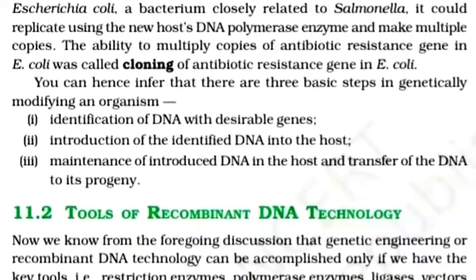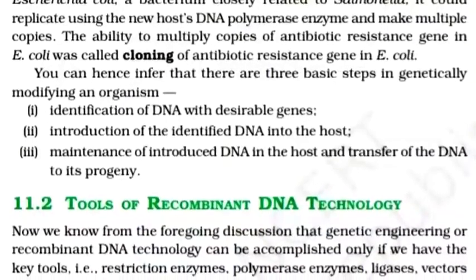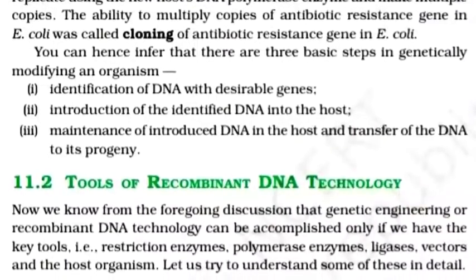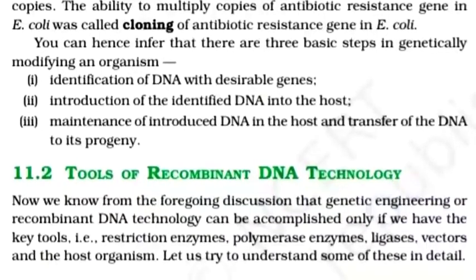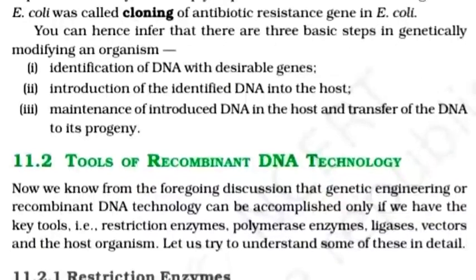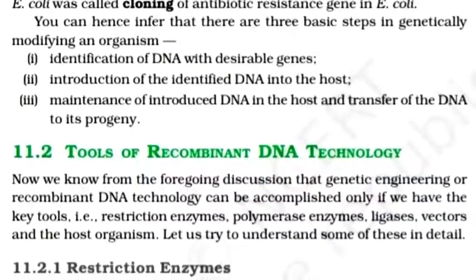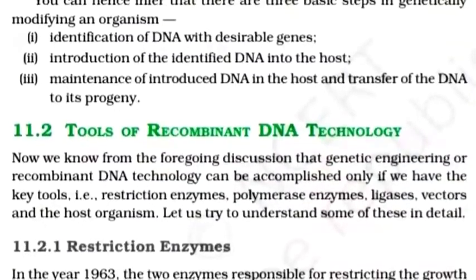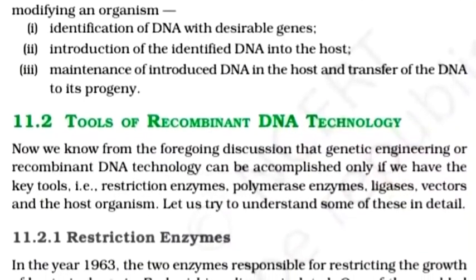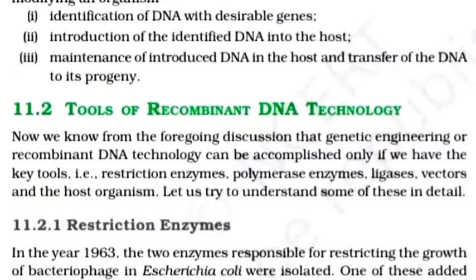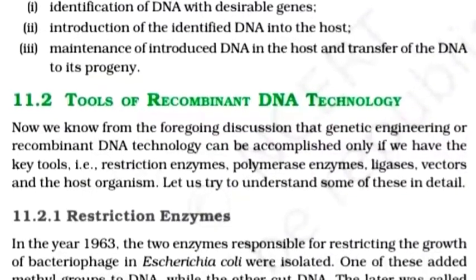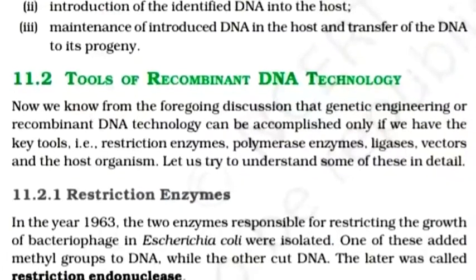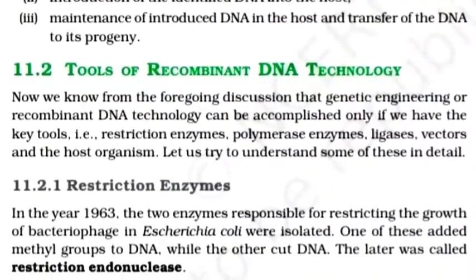There are three basic steps in genetically modifying an organism: identification of DNA with desirable genes; introduction of the identified DNA into the host; and maintenance of the introduced DNA in the host and transfer of DNA to its progeny. Recombinant DNA technology can be accomplished only if we have the key tools: restriction enzymes, polymerase enzymes, ligase, a vector, and the host organism.